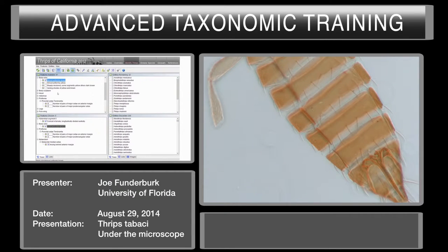I might also point out — since I know what this species is in advance — that this particular species has a yellow form. It should not matter in the key if your particular specimen is almost uniformly yellow; if you happen to choose that, it should not discard the species.